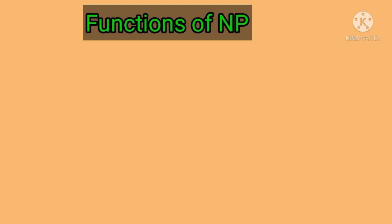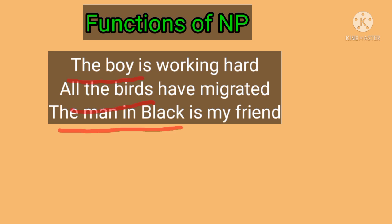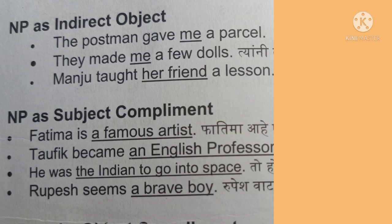It is important to remember that a noun phrase can be used at seven different places in a sentence: as the subject, direct object, indirect object, subject complement, object complement, adverbial, and as the object of a preposition. Examples of NP as subject: 'the boy is working hard,' 'all the birds have migrated,' 'the man in black is my friend.' Examples of NP as indirect object: 'the postman gave me a parcel,' 'they made me a few dolls,' 'Manju taught a friend a lesson.'